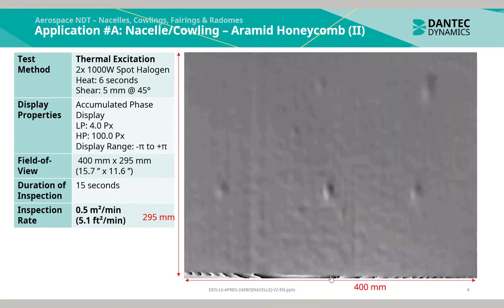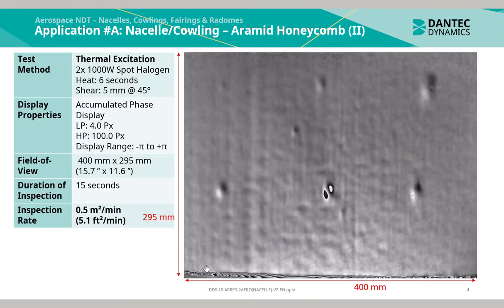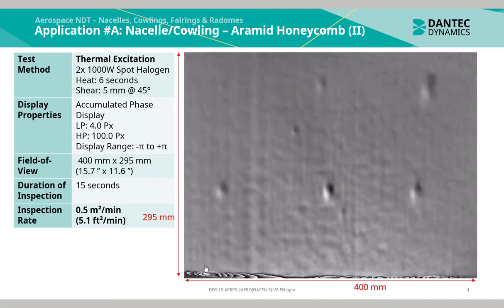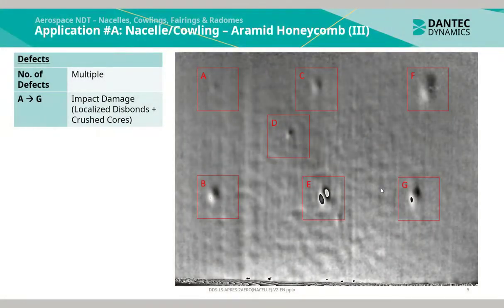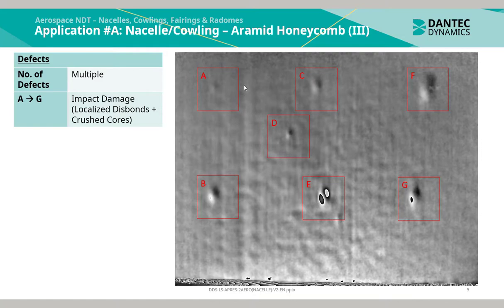The inspection duration took approximately 15 seconds and the inspection rate was 0.5m² per minute. Seven indications were caused through impact damage. A metallic ball was dropped at varying heights yielding a potential energy simulating an impact at a specific energy level. Defects A to G are all representations of impact damage — specifically localised disbonding but also crushed cores. Defect E indicates the highest potential energy impact simulation, and indication A is the lowest.